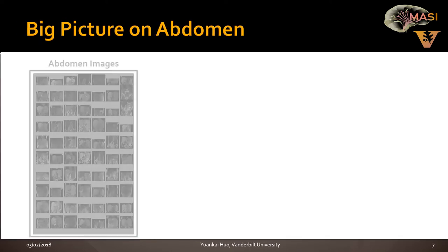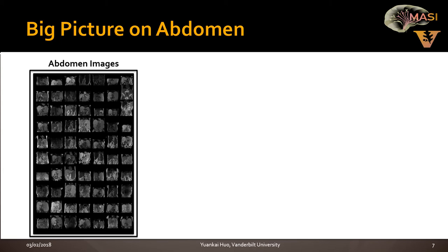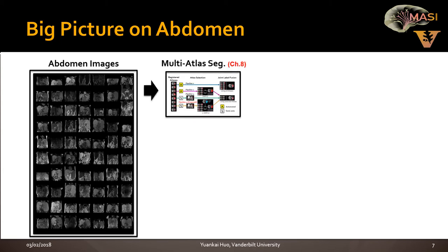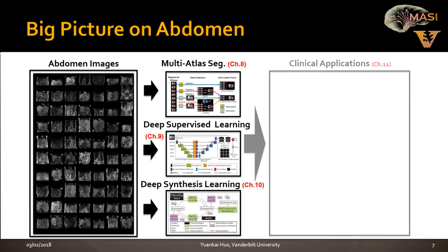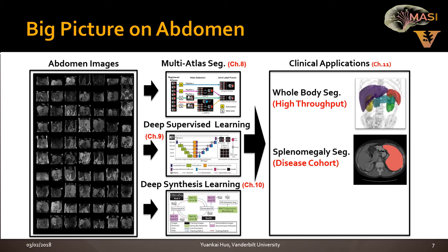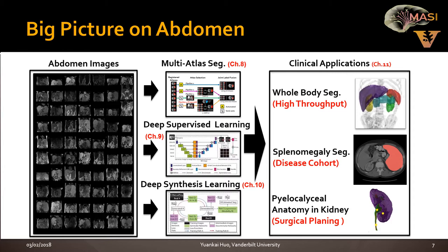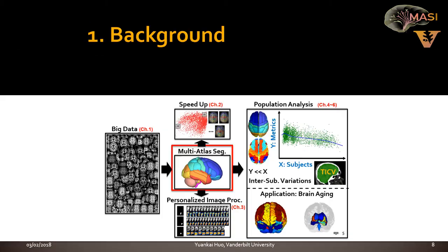For the abdomen, we also acquire a whole bunch of abdomen images. We first try multi-atlas segmentation, we also try deep learning and synthesis learning. We apply whole-body segmentation and splenomegaly segmentation. We also have the renal collecting system segmentation for the kidney. Additionally, there is a presentation on doing segmentation and landmark detection simultaneously.